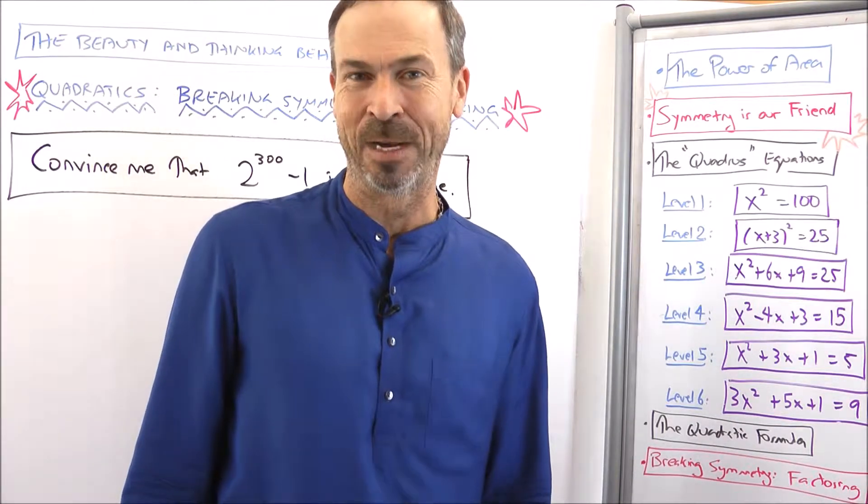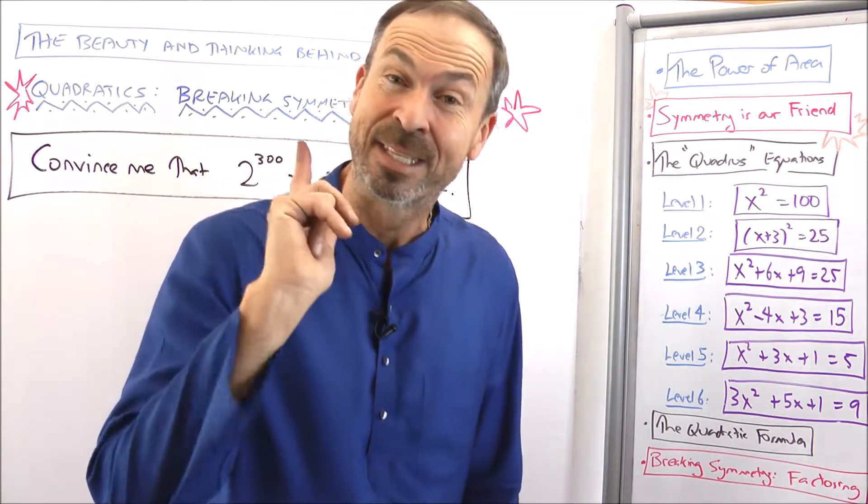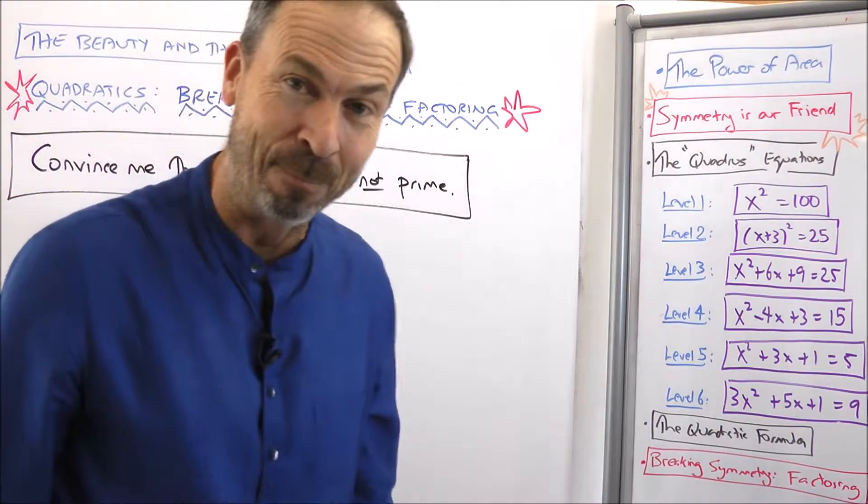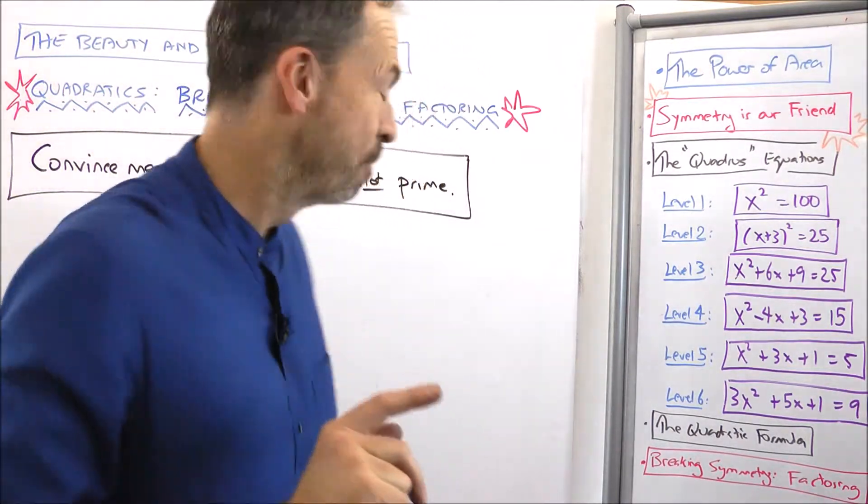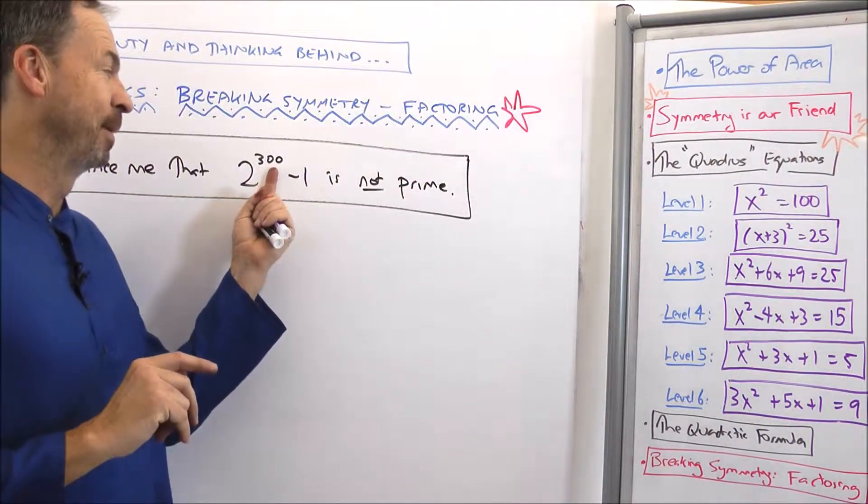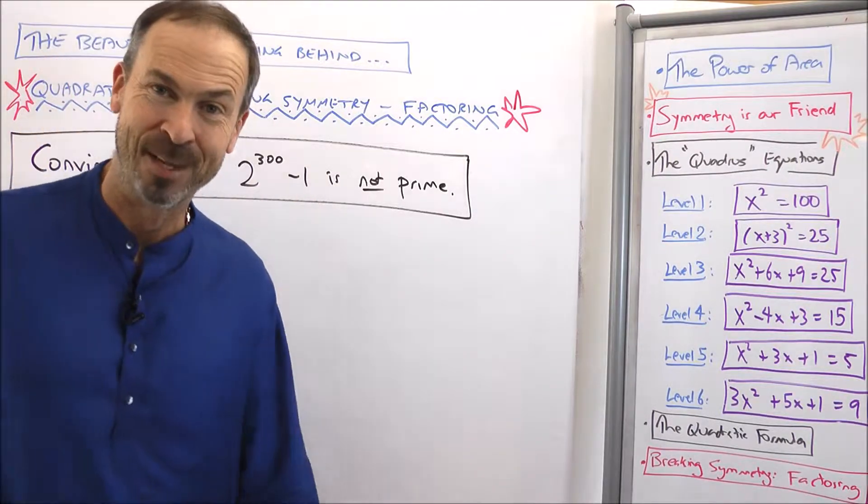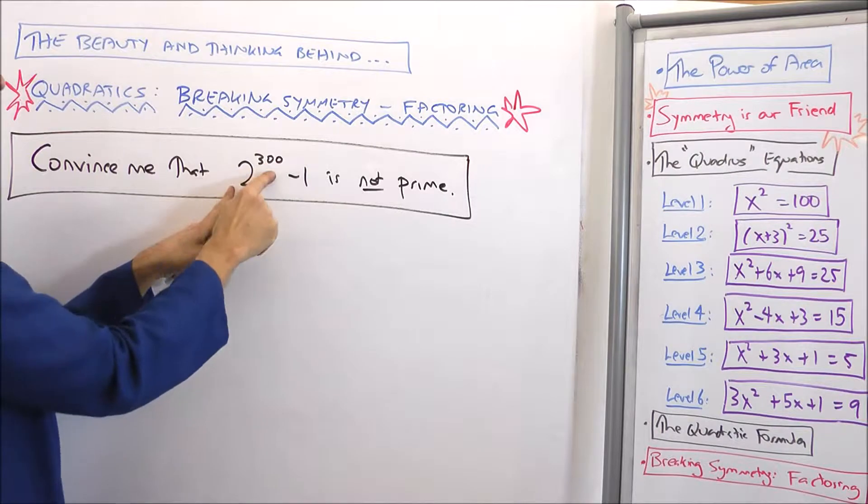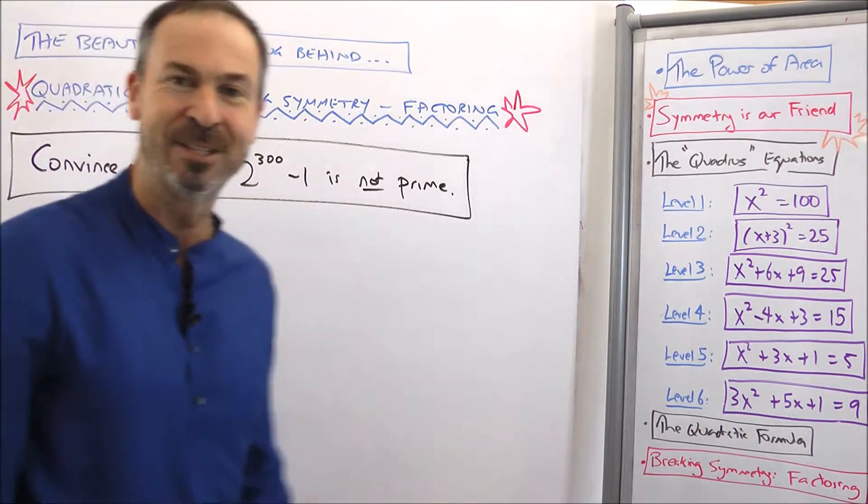Alright, back to the opening puzzler. Remember we're looking at Mersenne primes. Numbers of the form 2 to something minus 1 that turn out to be prime. Now that French monk, Mersenne, managed to prove that 2 to a composite number minus 1 is never prime. So my puzzle was, how do you do it? How would you convince me, say for example, 2 to the 300th power minus 1 is not prime.